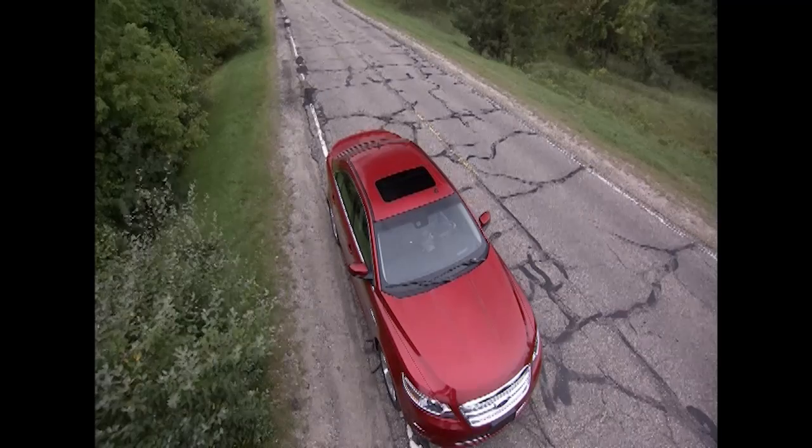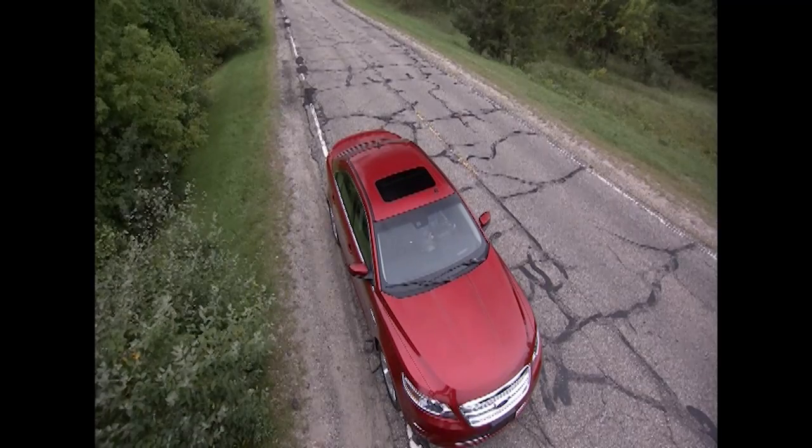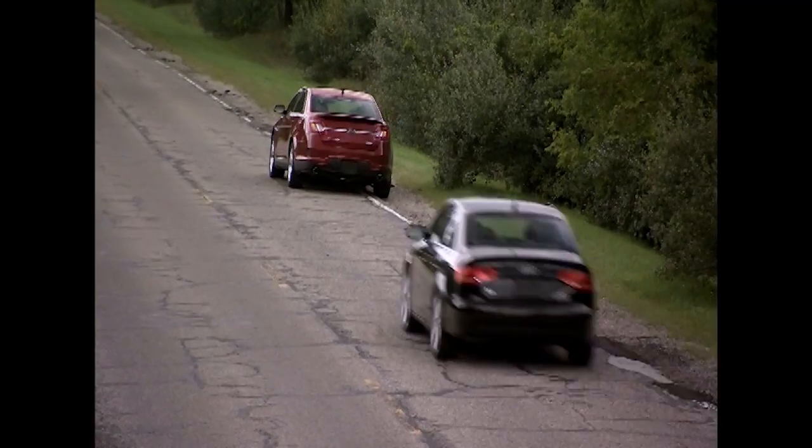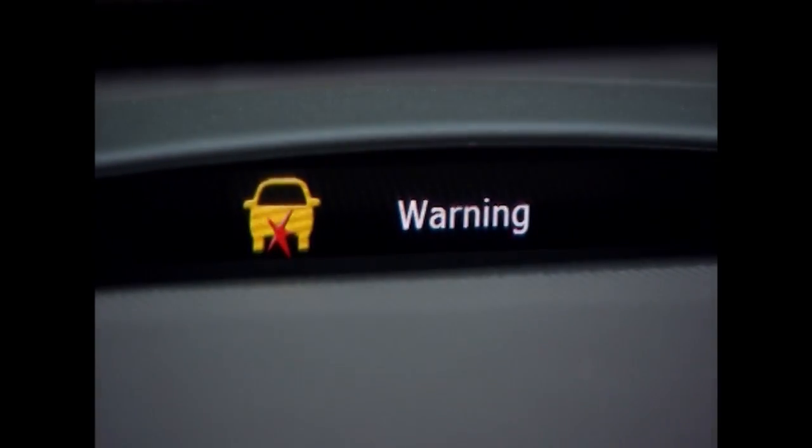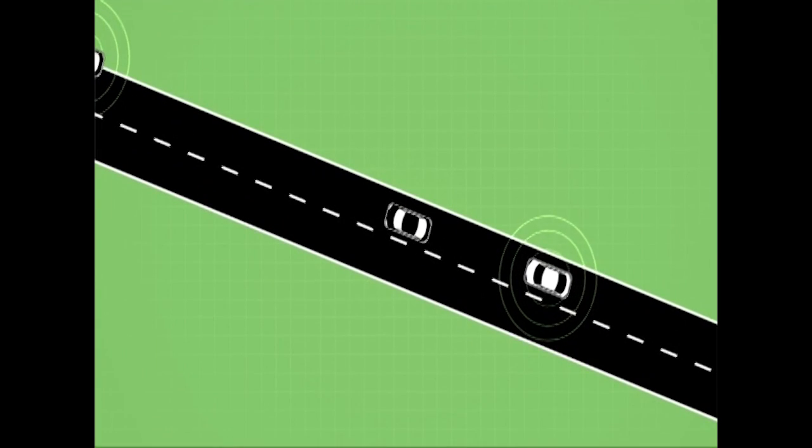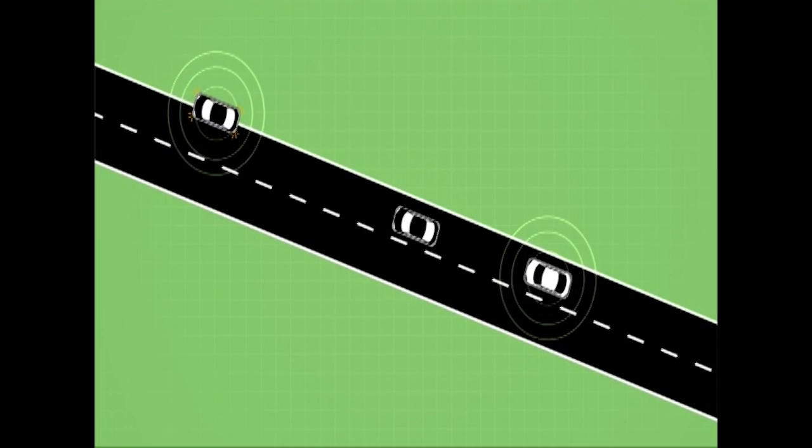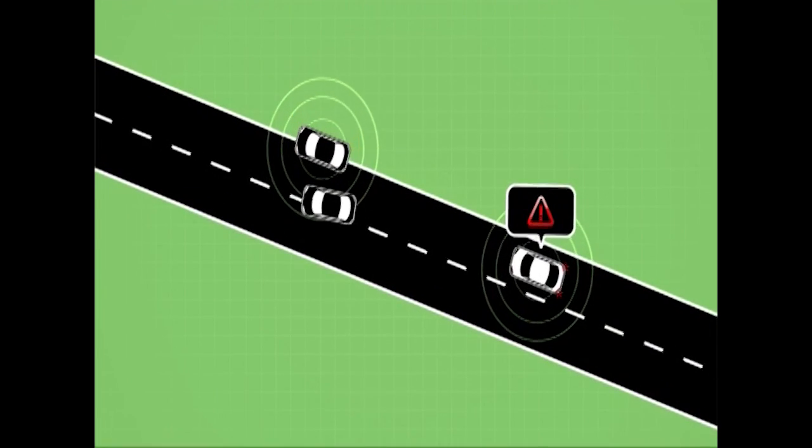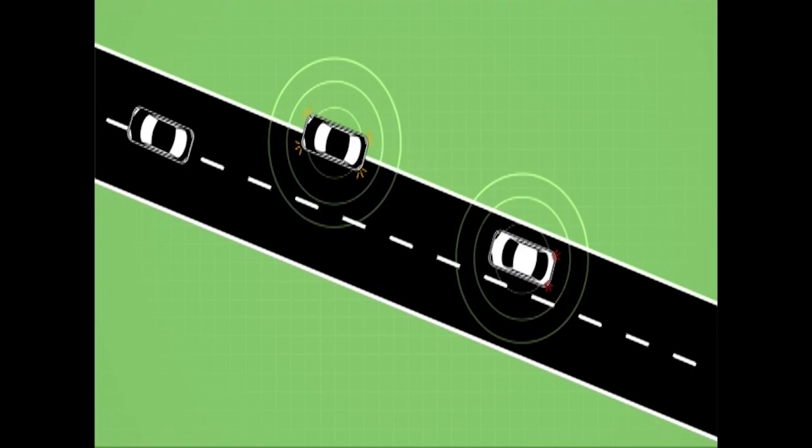Now, consider that a vehicle ahead of you has, for example, run out of gas and is stopped in your lane. The vehicle directly in front of you makes a late-lane change around the stopped vehicle. Even though you can't see the stopped vehicle, because of V2V communication, your vehicle is aware of the stopped vehicle and provides you with a warning ahead of time so that you can safely slow your vehicle before reaching the stopped vehicle ahead.